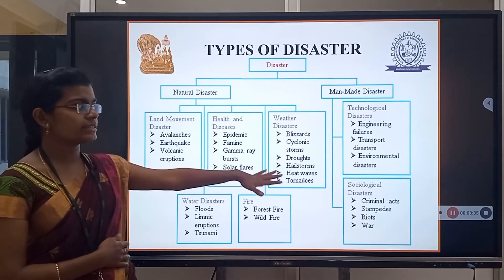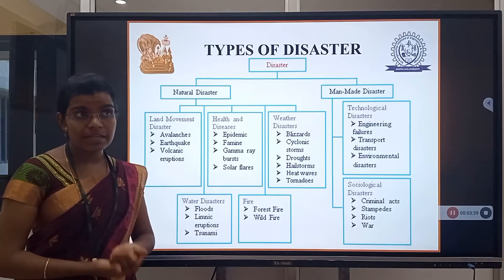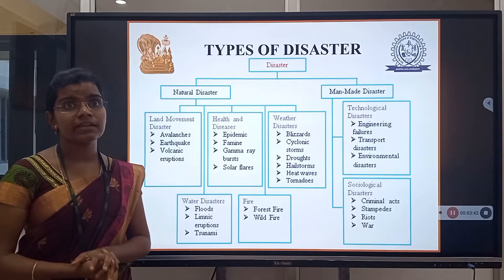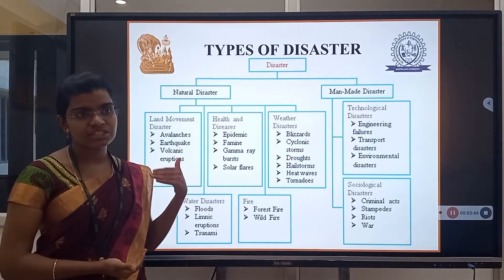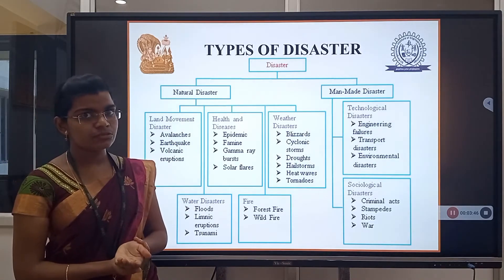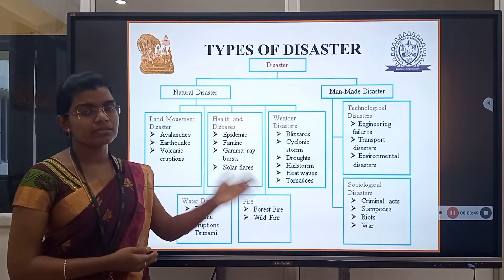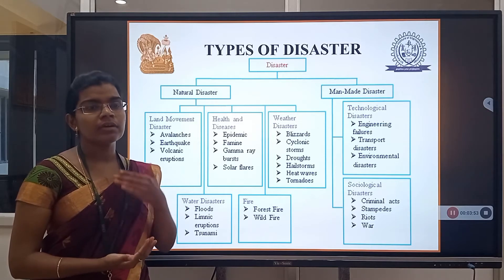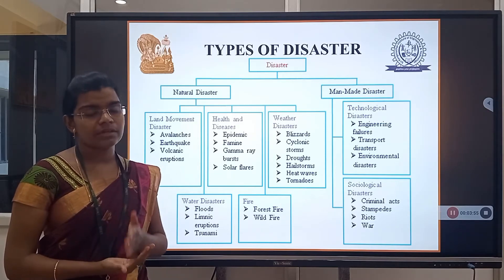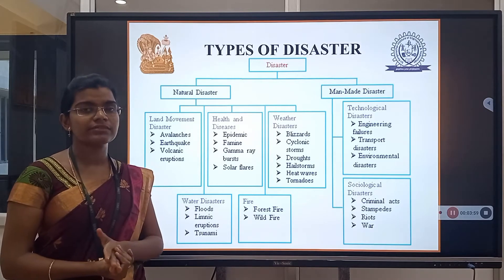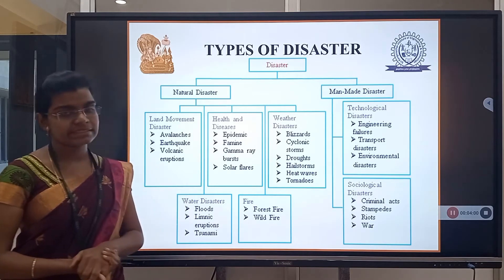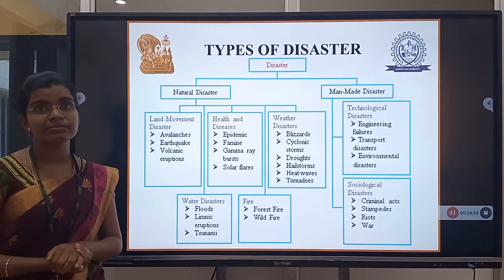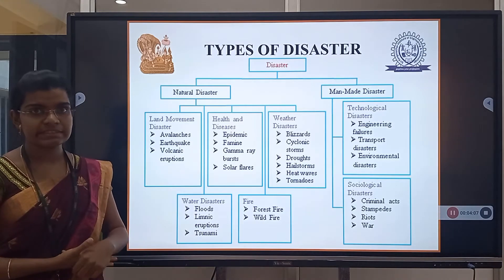Coming to man-made disasters, recently you have heard news that in Russia an oil spill took place. This all comes under man-made disaster. It happens when a person is not careful in doing their work. Sometimes it may affect a small group of people and sometimes it is huge, and when it is huge, we call it a disaster.